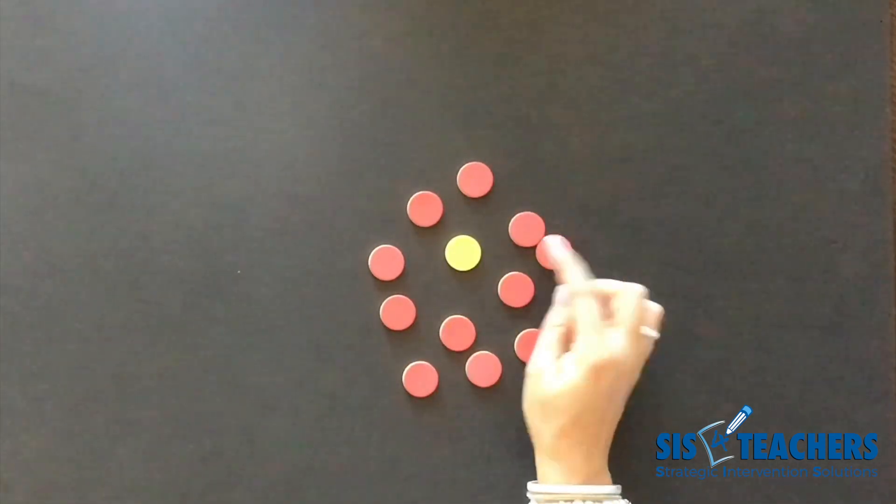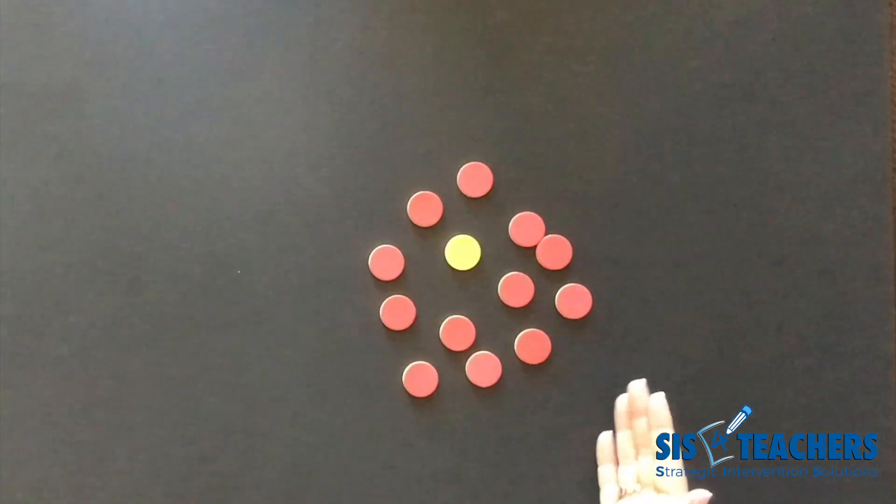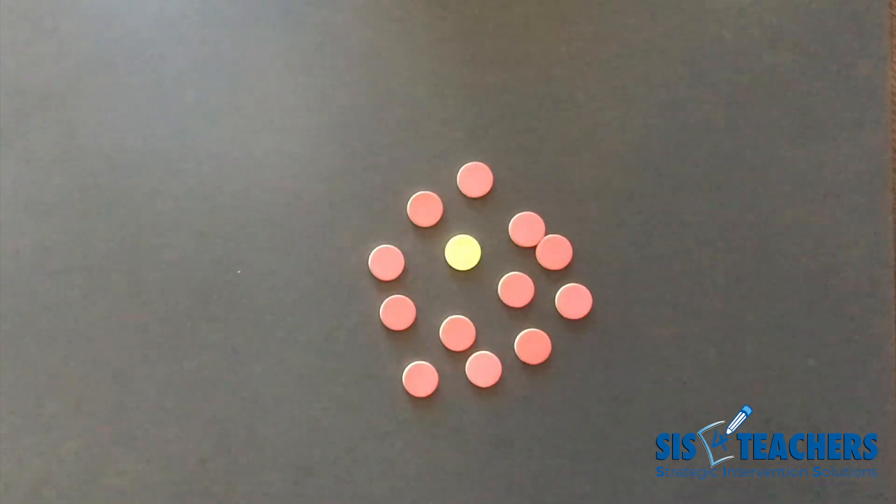We have 12 red counters and one yellow counter. The strategy is really for students to figure out what is a foolproof way that will make it so that they can always win.